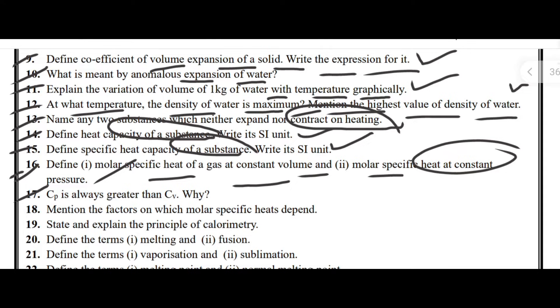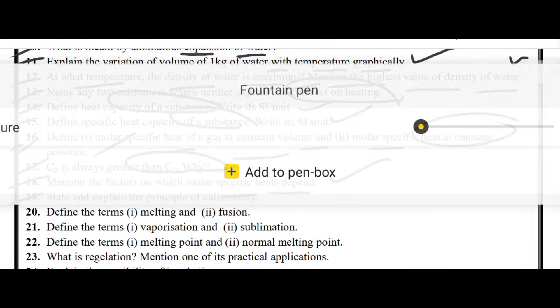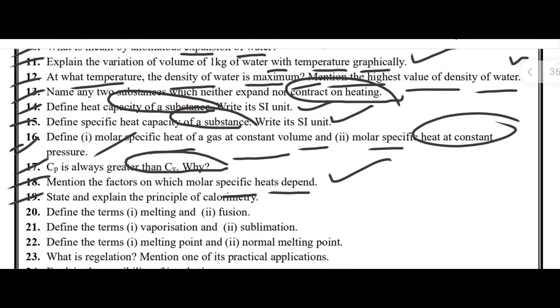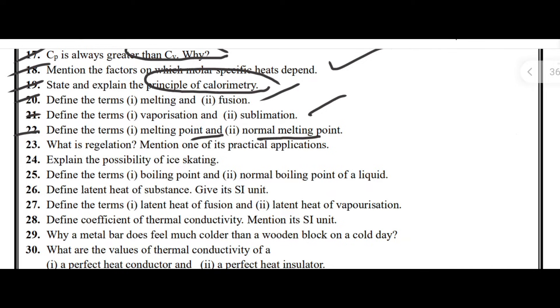Define molar specific heat of a gas at constant volume and molar specific heat at constant pressure. Next one, CP is always greater than CV, why? Next one, mention the factors on which molar specific heat depends.